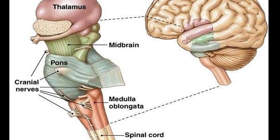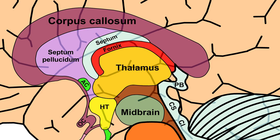Descending tracts are the axons of upper motor neurons destined to synapse on lower motor neurons in the ventral horn and posterior horn. In addition, there are upper motor neurons that originate in the brainstem's vestibular, red, tectal, and reticular nuclei, which also descend and synapse in the spinal cord. Secondly, the cranial nerves numbered 3 through 12 emerge from the brainstem. These cranial nerves supply the face, head, and viscera.